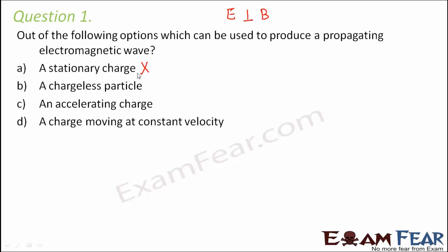The third option is an accelerating charge — a charge that is moving with acceleration means its velocity changes with time. In this case we have both an electric field and a magnetic field, and both will change with time. Option D is a charge moving at constant velocity — constant velocity means acceleration is zero, so the electric and magnetic fields will not change with time. So option D is also incorrect. The right option is C.